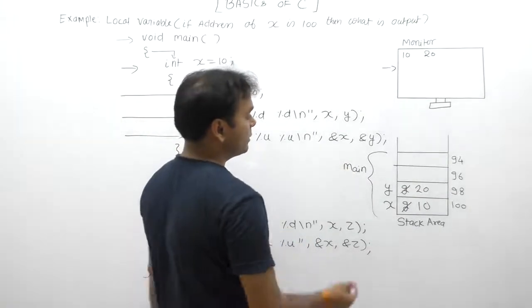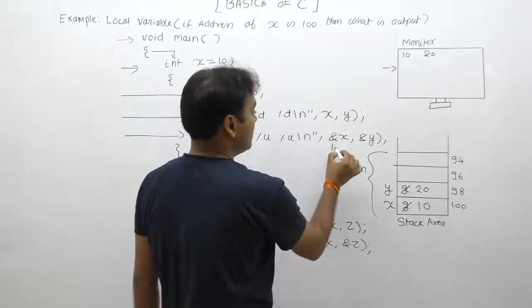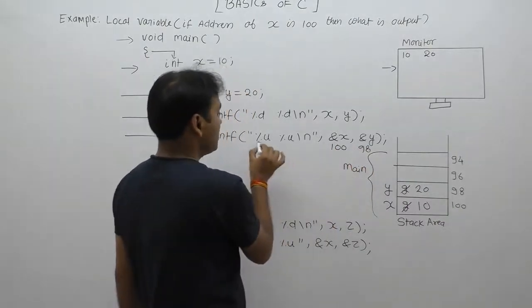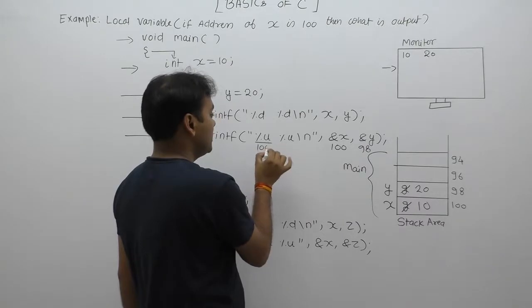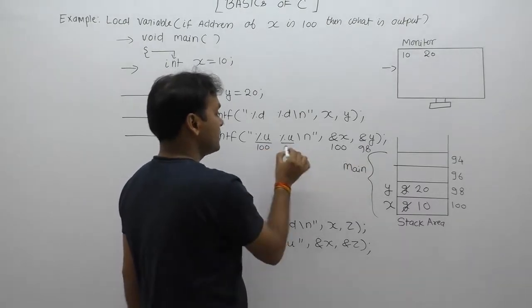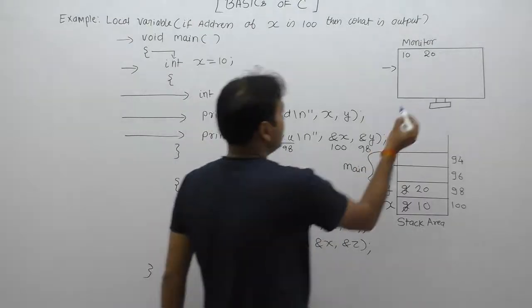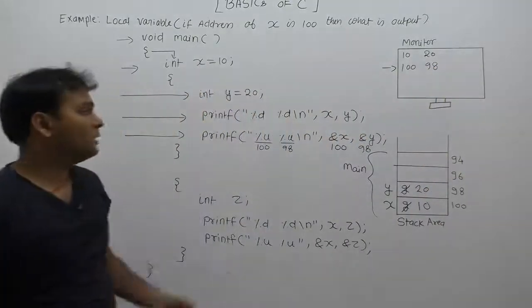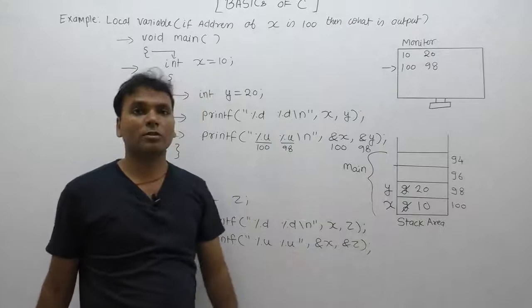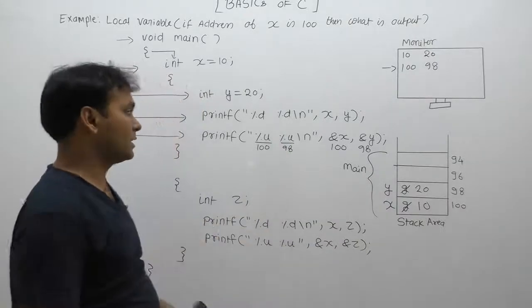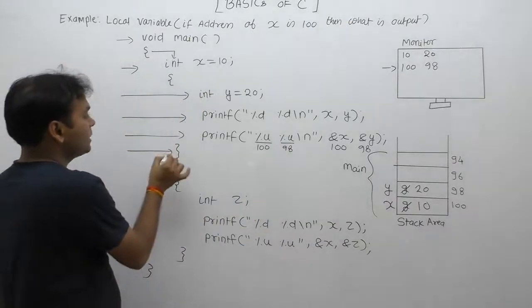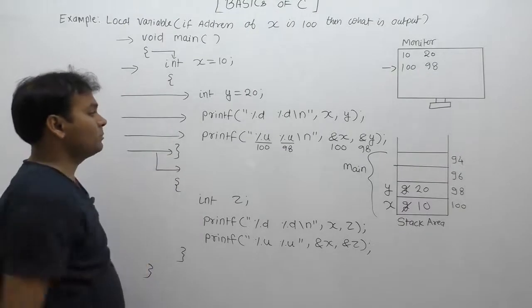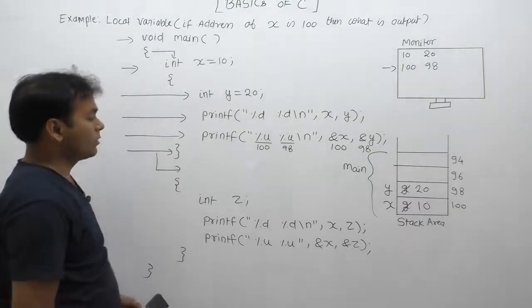Next, we are displaying the address of x and the address of y. According to the diagram, the address of x is 100 and the address of y is 98. Therefore, in place of the first percent value, 100 is substituted, and in place of the second percent value, 98 is substituted. The final displayed message is 100 and 98. The address of y can be observed based on x's address due to the property of the stack. After the block's execution is complete, control moves outside that block.